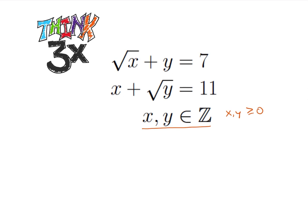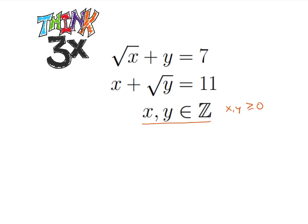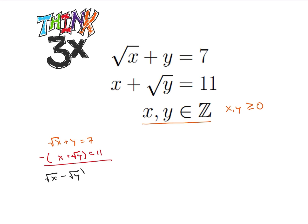So what I'm going to do is take the equation: square root of x plus y is equal to 7, and subtract my second equation — x plus the square root of y is equal to 11. What I get is: the square root of x minus the square root of y, plus (y minus x), and that equals 7 minus 11, which is negative 4.